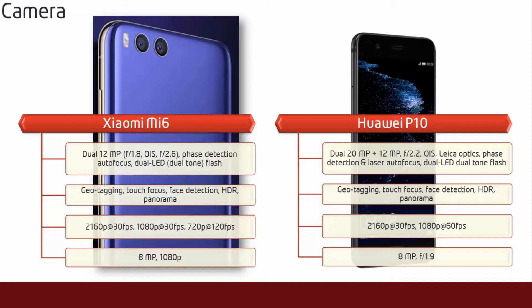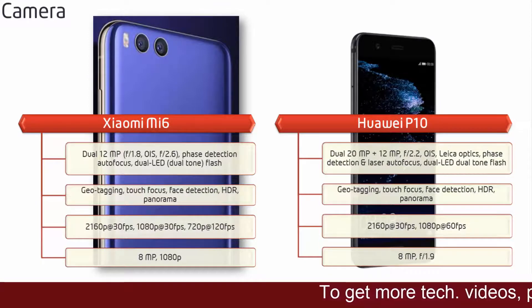About the camera, the Mi 6 comes with a dual 12MP primary camera with f/1.8 aperture, phase detection, auto focus and dual LED dual tone flash. It shoots videos of 2160p, 1080p at 30 frames per second and 720p at 120 frames per second. Mi 6 also comes with a secondary camera of 8MP with 1080p recording.